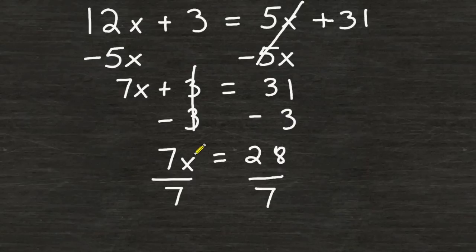On the left hand side, we can cancel out both 7's because anything divided by itself is 1. And that leaves us with 1x on the left hand side of our equation.